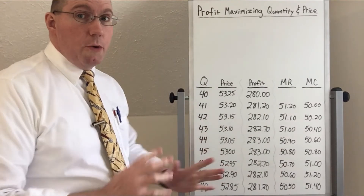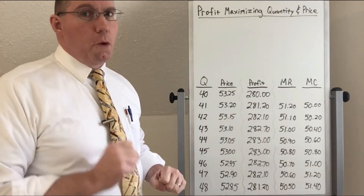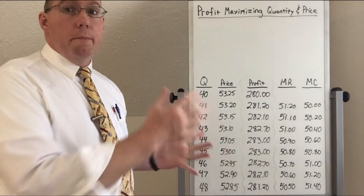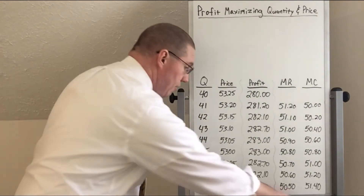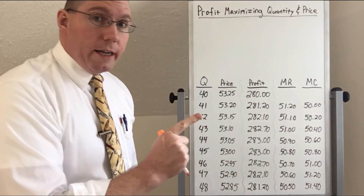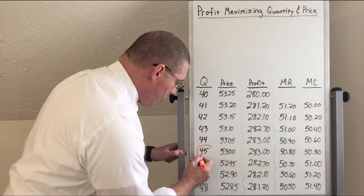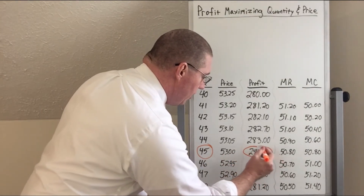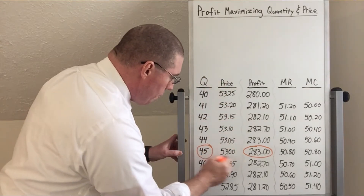Here's the argument I'm going to make between those two. If I have a business and I can have 44 of my products out there or 45 of my products out there, I would rather have 45 because I was able to employ more people, I have more people who are satisfied, and I'm getting the exact same amount of profit. So the profit-maximizing quantity in this case is 45, giving us the highest profit of 283, and the price we should charge is $53.